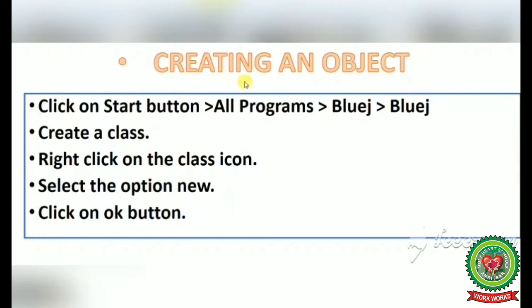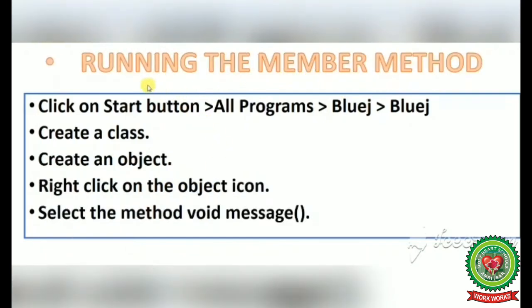The next topic is creating an object. Steps: click start, all programs, BlueJ, then create a class, right click on the class icon, select the option new, and click OK. After following these steps you will have created an object of the class. To run the member method: create a class, create an object, right click on the object icon, and select the method void message.